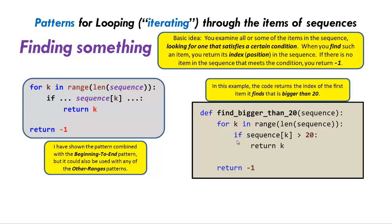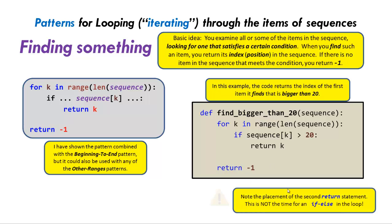Here's a concrete example: finding an element in the sequence that's bigger than 20. We go through the whole sequence, and if sequence k is bigger than 20 at any point, we return k. So if sequence 0 is bigger than 20, we return zero; if sequence 1 is bigger than 20, we return one. As soon as we find one that's bigger than 20, we leave the function — because that's what return does — and return that position. If we go all the way through and none were bigger than 20, we return minus one. Note the placement of the second return: it's not inside the for loop. You must go all the way through the loop before you can say it's not in the sequence.